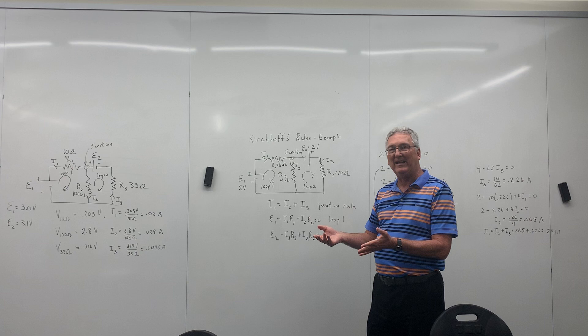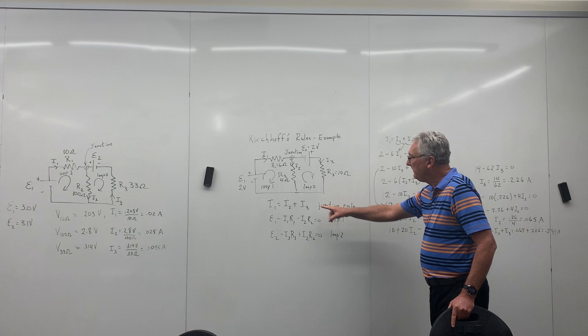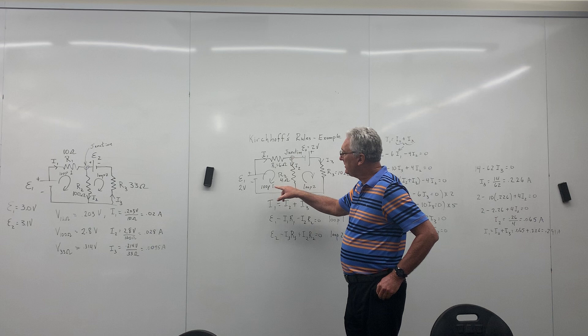The junction rule simply states that electrons aren't lost at the junction. So whatever current's coming in is equal to the current going out. So in this case, you choose the direction of the current. So if you happen to be wrong, you'll get the current as negative, which means you've chosen the wrong direction. So I've chosen I1 to be into the junction. I2 and I3 are leaving the junction. So therefore I1 equals I2 plus I3. So that's the first one and that's from the junction rule.